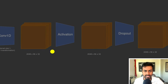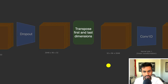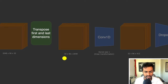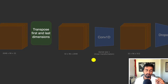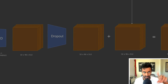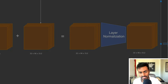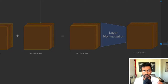We pass it through an activation function to help the network learn more complexity, then perform dropout with no change in shape. We then transpose back to 32 × 96 × 2048 and perform another convolution to reduce from 2048 back to 512 dimensions. We add dropout and a residual connection to ensure gradients flow through the network, then perform layer normalization to stabilize tensor values and make training more stable.